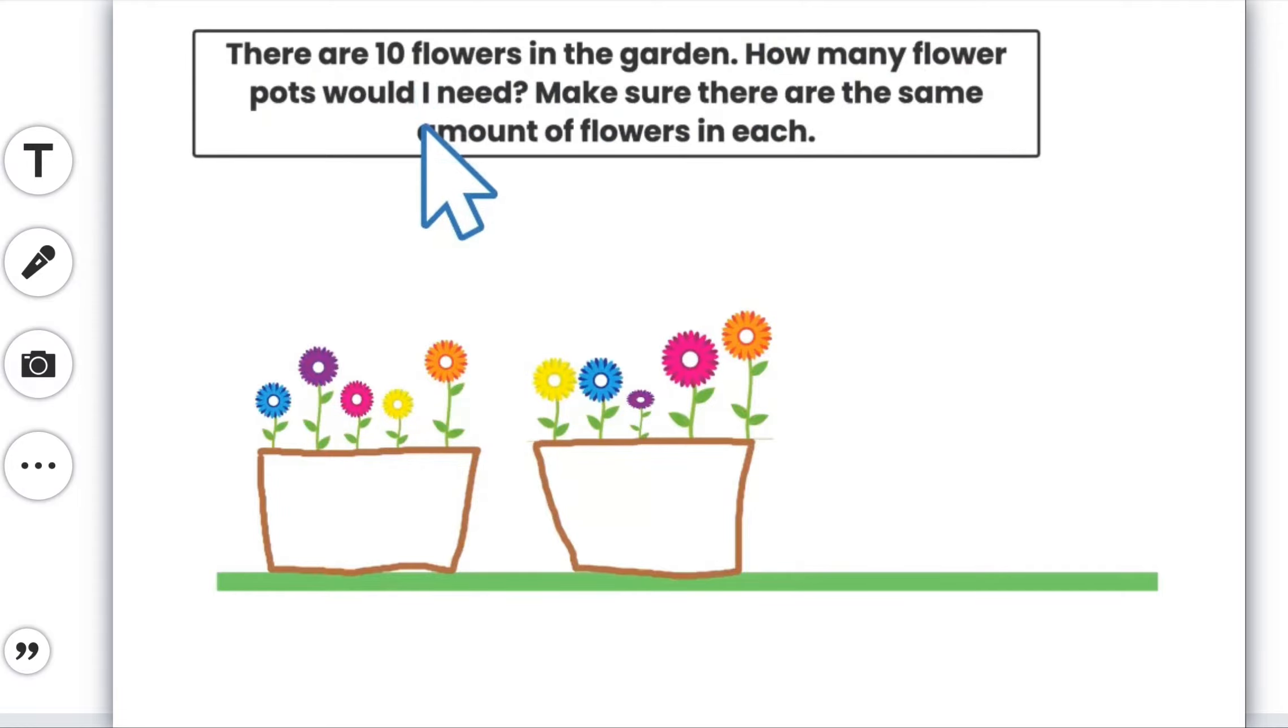How many flower pots would I need? And that's what you need to figure out. So I got 2 because I knew that 5 plus 5 was 10. And now I'm making sure that there's the same amount. I've already counted them and I know that they are equal. Now another thing that you can do. You don't have to do 5 in each.